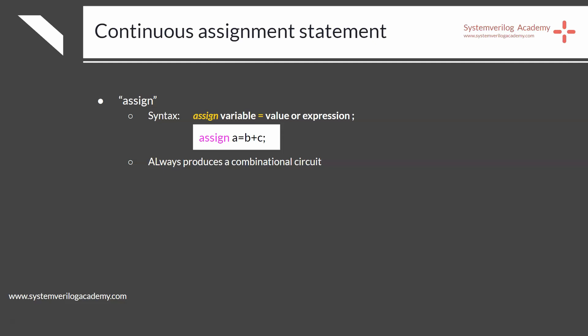First is continuous assignment. The keyword assign is used for continuous assignments in Verilog and SystemVerilog. In Verilog, only a wire type variable can be assigned using assign statements, but in SystemVerilog it can also be used with a register type variable. A single assign block can only have a single statement; therefore, the begin keyword should not be used with assign. The syntax is: assign variable = value; or assign variable = expression; The assign statement will always produce a combinational circuit. Any change in the right-hand side expression will reflect in the left-hand side immediately.